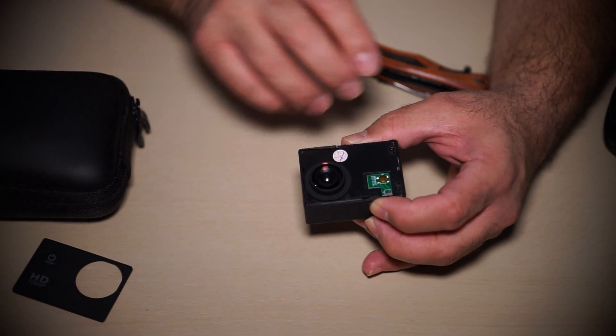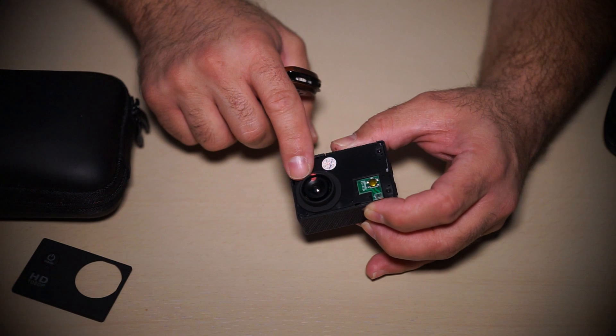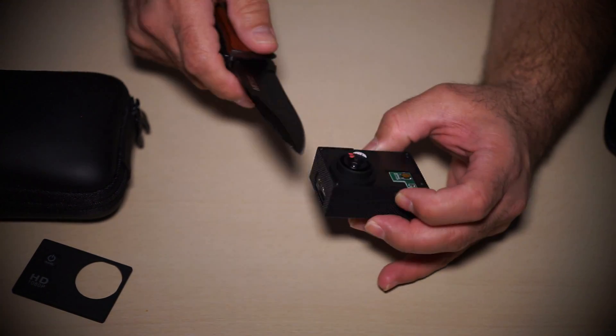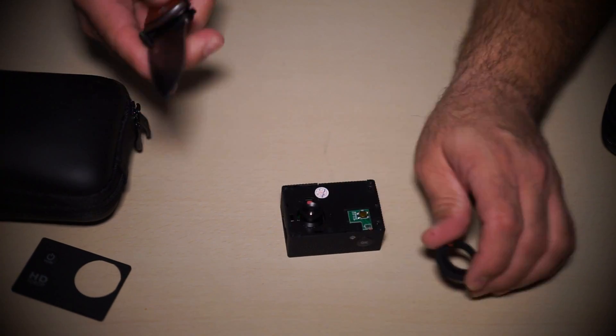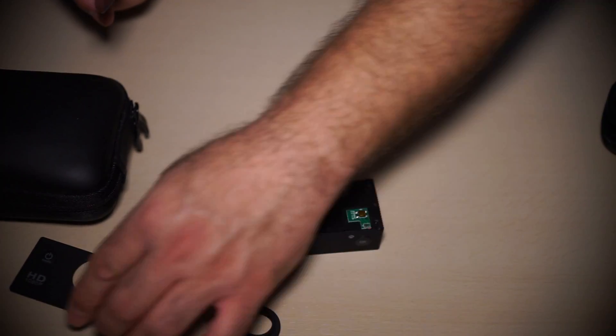Now there's a ring around the lens. Remove that. It pops right off with a knife. Put that to the side.